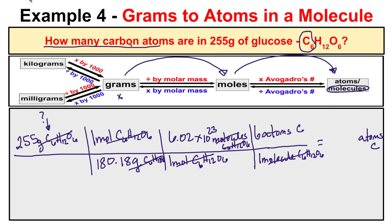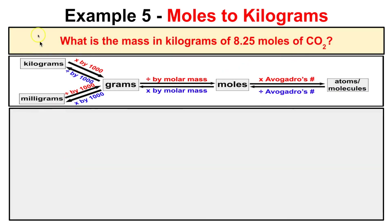Getting our calculator out, we take 255 divided by 180.18, times Avogadro's number, times six, and we end up with 5.11 times 10 to the 24th atoms of carbon using the correct number of significant figures. So if you have 255 grams of glucose, it is going to contain 5.11 times 10 to the 24th atoms of carbon. Let's take a look at another example.